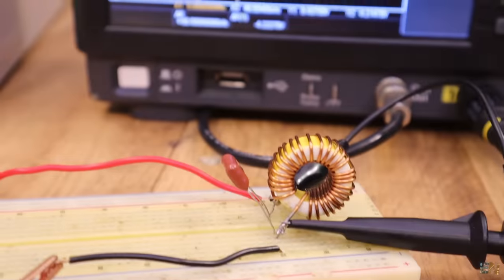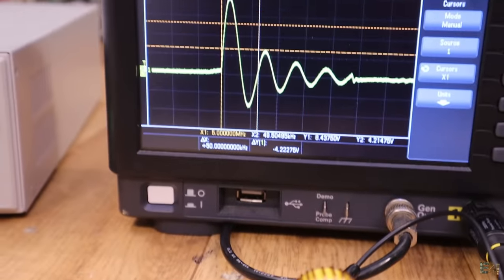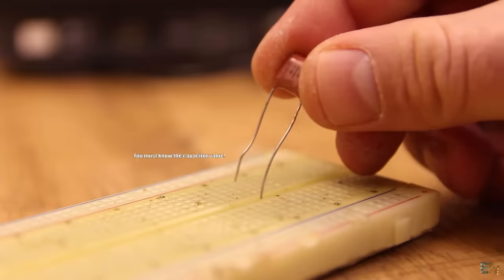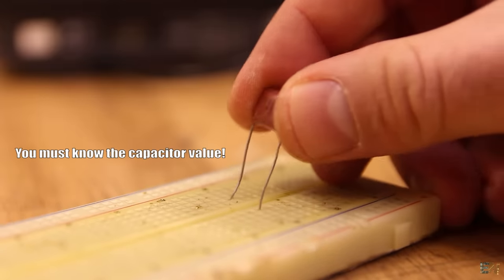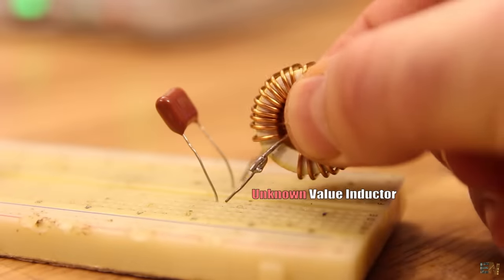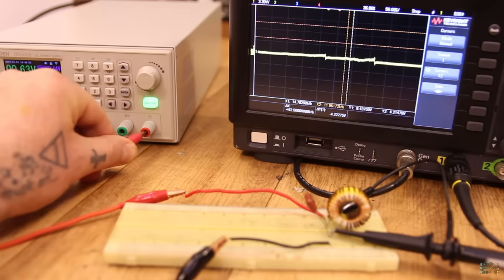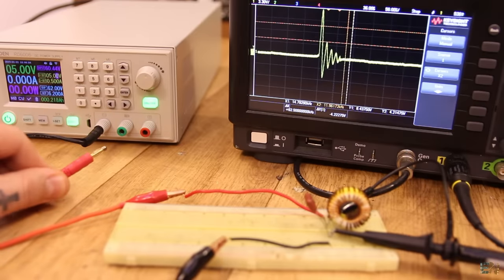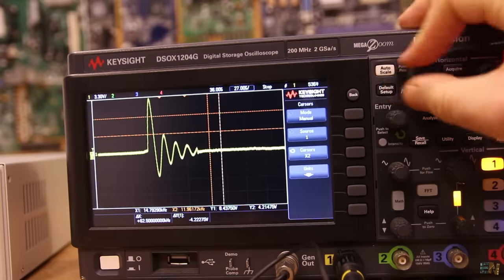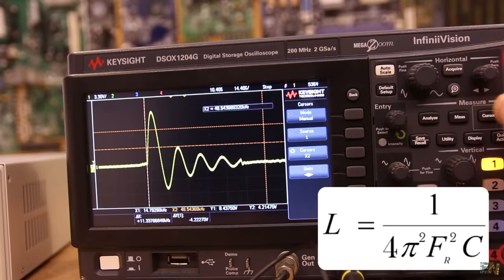By the way, this is how you could calculate a random coil inductance using the oscilloscope. You take for example, a 100nF capacitor. Then you connect the random coil. You apply a 5V pulse to the LC tank and then we measure the frequency on the oscilloscope. Then you put the capacitor value and the frequency into this formula and voila, we get the inductance value.